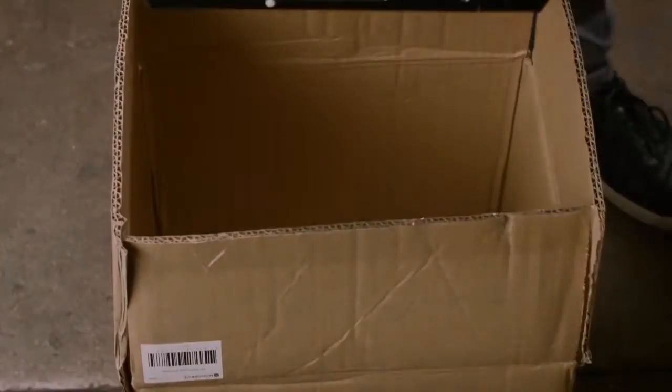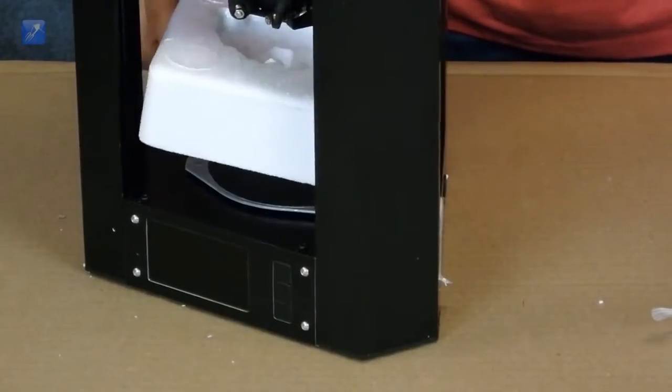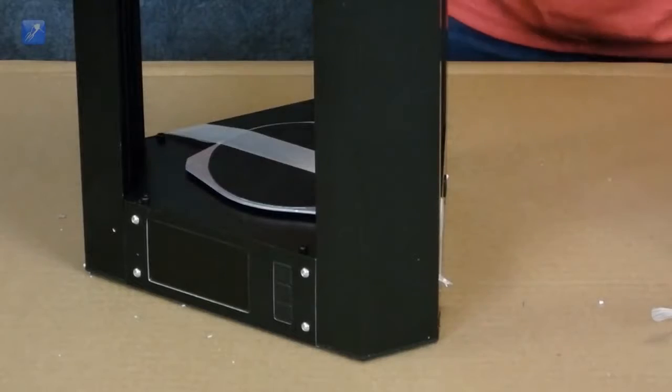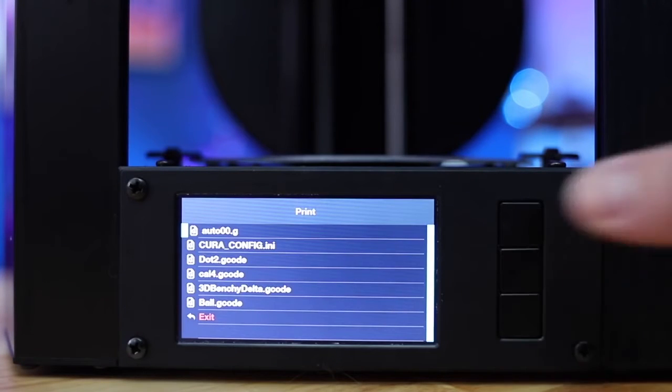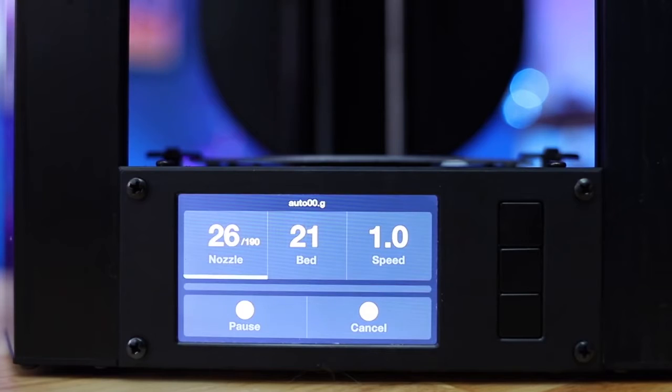Physically, the MP Mini Delta is a simple printer to set up. You just unpack it, remove some packing tape and foam, and plug it in. You then use the LCD screen and controls on the printer to load the filament, with the reel hanging on a hook on the back of the printer body.